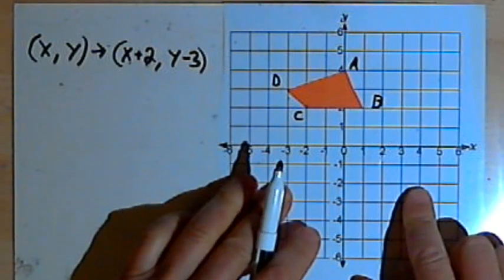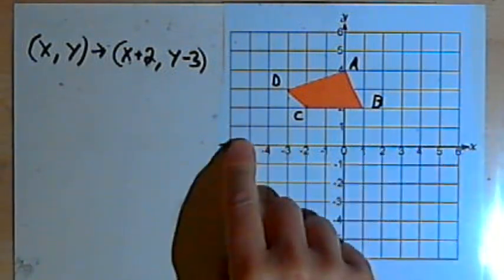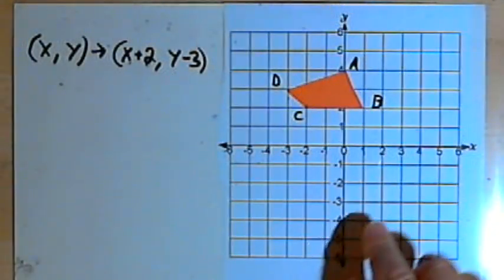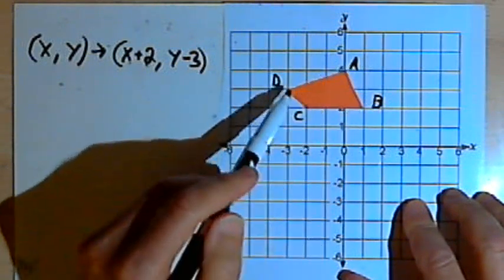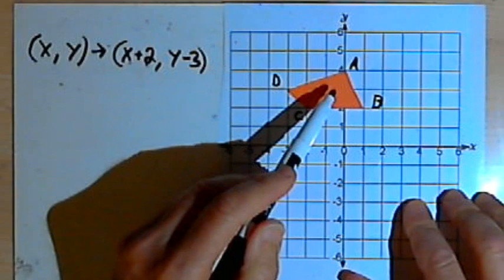So I've got the coordinate plane here, I've got the x-axis labeled and the y-axis, and I've got this orange quadrilateral that I've labeled ABCD. That's the image we're going to translate.